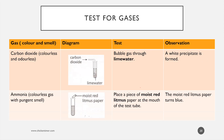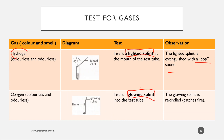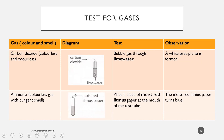CO2 - carbon dioxide - same idea. Hydrogen gives a pop, oxygen rekindles. Carbon dioxide extinguishes the lighted splint. And if they ask for the white precipitate name, it's calcium carbonate.